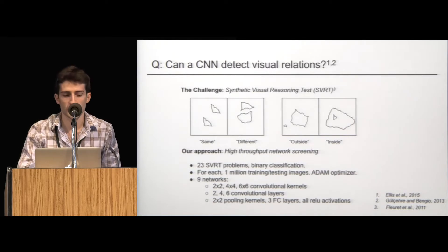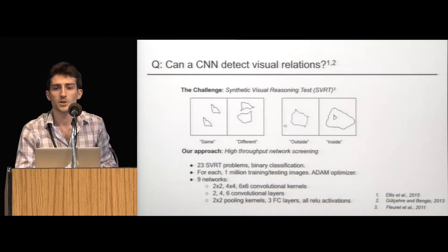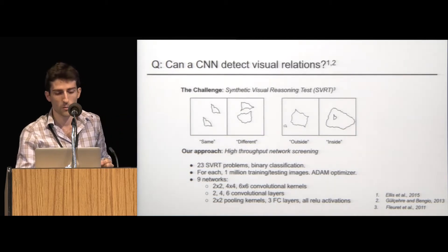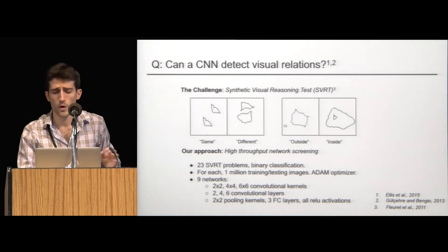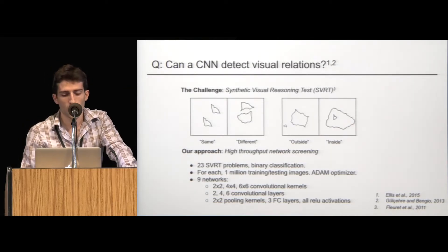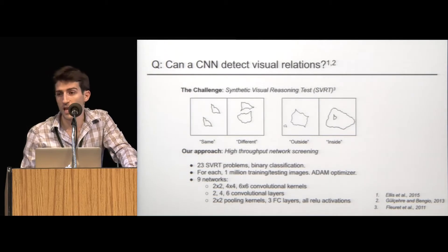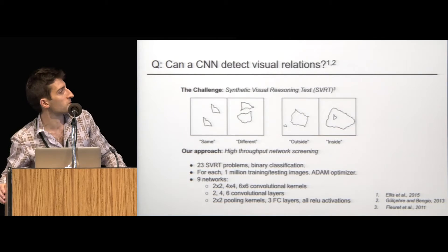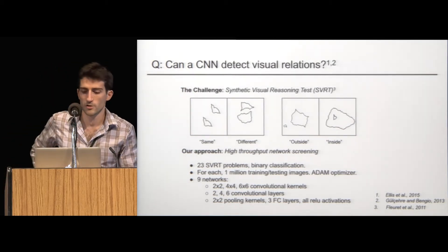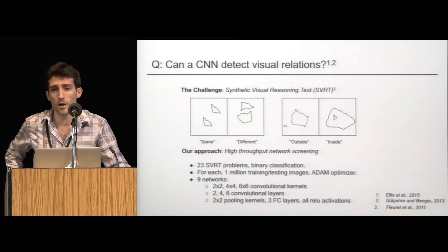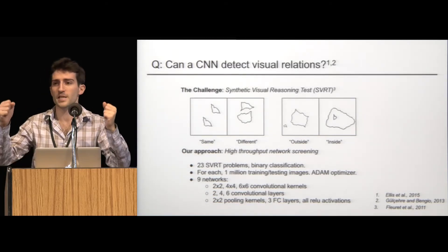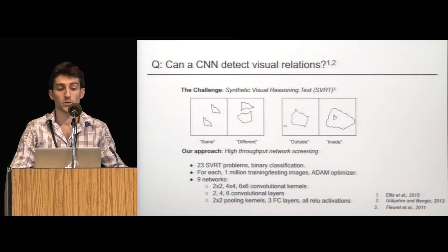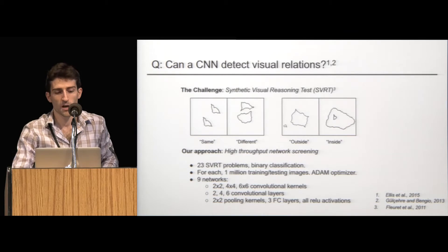Now there are 23 of these problems. And our approach to testing CNNs on these is we're going to cast each of the 23 problems, these SVRT, synthetic visual reasoning test problems, as a binary classification problem. For each one, we're going to generate a million training and testing images. And then with an Adam optimizer, we're going to train nine different networks parametrized by various architectural features, for example, the size of convolutional kernels, the number of convolutional layers, et cetera. And then from this high throughput method, we're going to choose the best network for each problem and plot the accuracy that it produced.